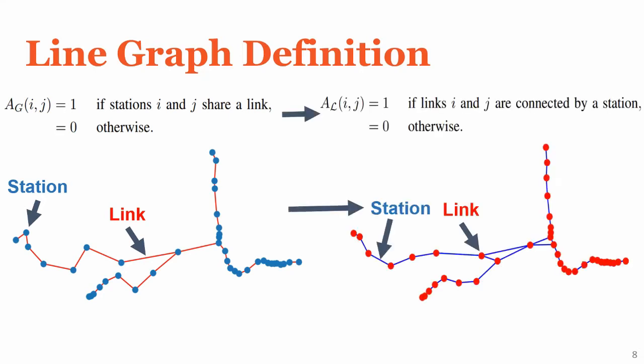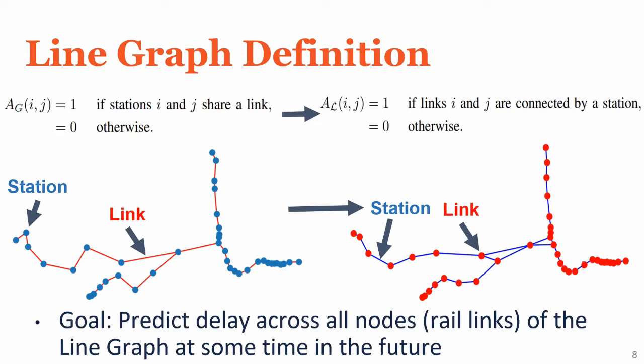In order to do this, we calculate what's known as the line graph, where the rail links become the nodes of the graph and the stations become the edges of the graph, and that formal definition is shown on the right. This has a very minor effect on the actual structure of the graph — you can see some change around complex junctions in the middle, but for the most part it doesn't change too much. Importantly, this changes our interpretation of nodes and edges and allows us to formally define our goal, which is to predict delay across all nodes of the line graph at some point in the future.